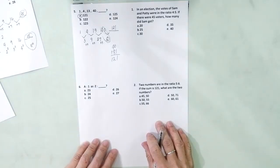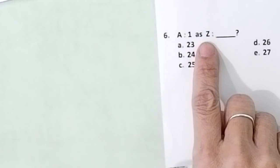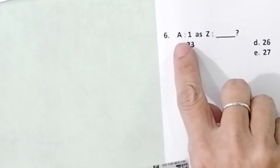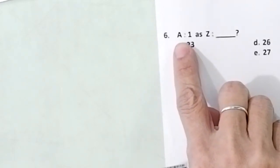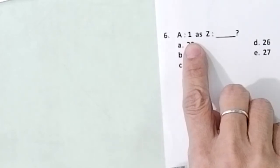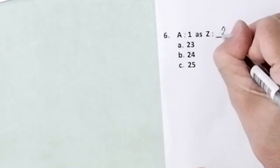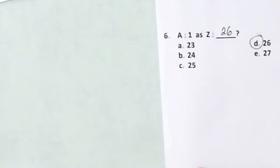Next problem. Problem number 6. If A is to 1, what is Z? These are just the position of the letters in the alphabet, English alphabet to be specific. Letter A is the first letter of the English alphabet. And Z is the 26th letter of the English alphabet. So our answer is letter T. We're done.